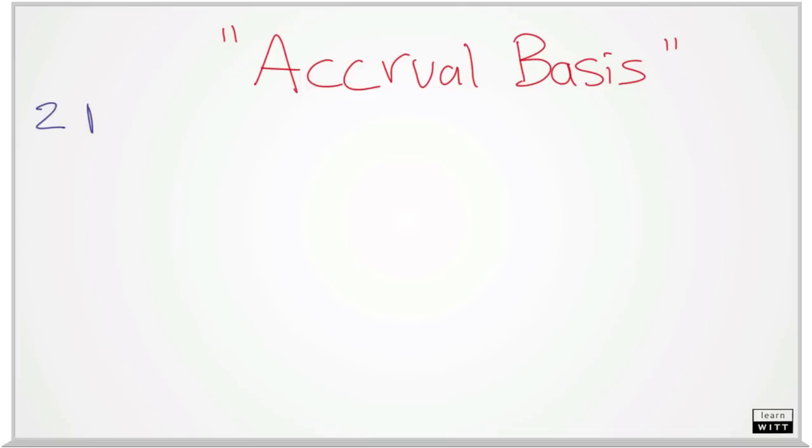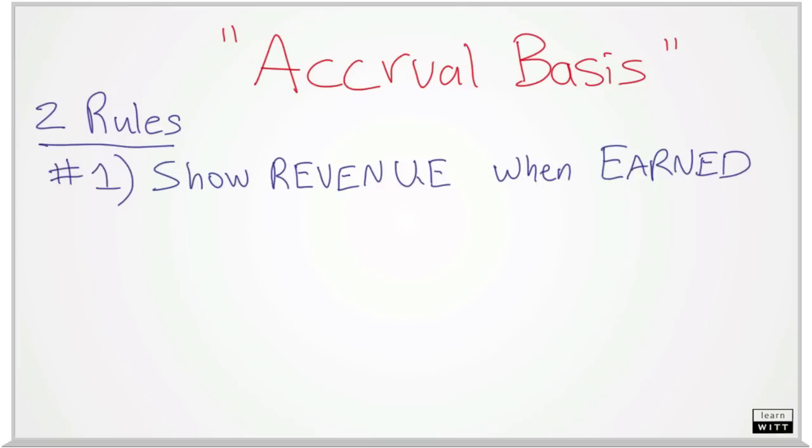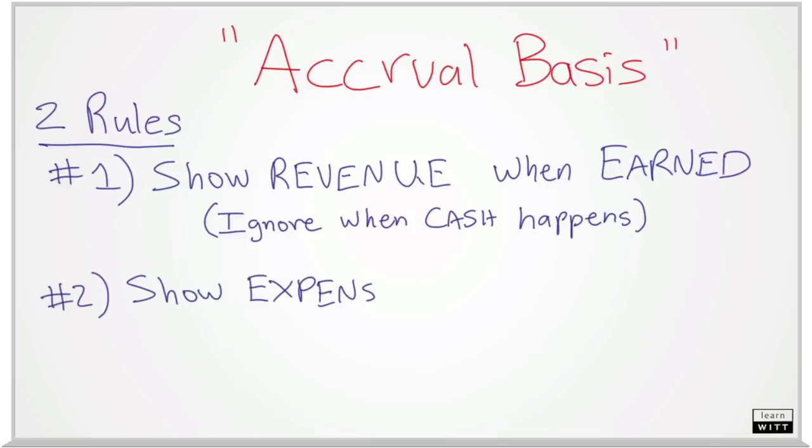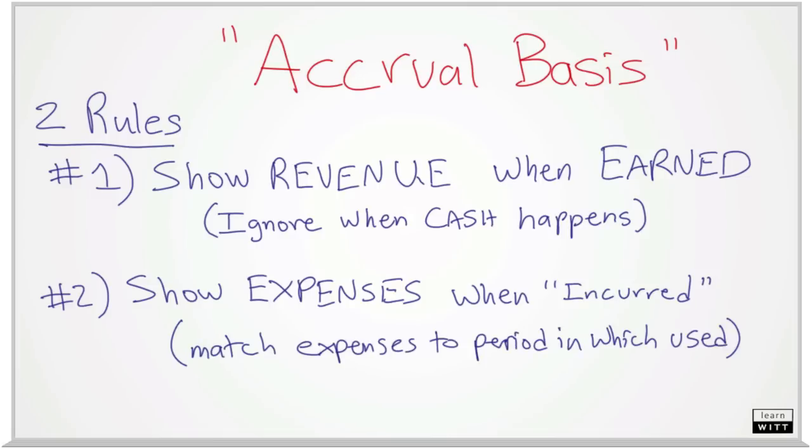Accrual accounting is based on two rules. The first rule is that revenue is shown on the books when it is earned, without regard to when cash happens. The second rule is that expenses are not written on the income statement until they are actually incurred, or used. The goal is to match expenses with the revenue that they helped the business to earn.